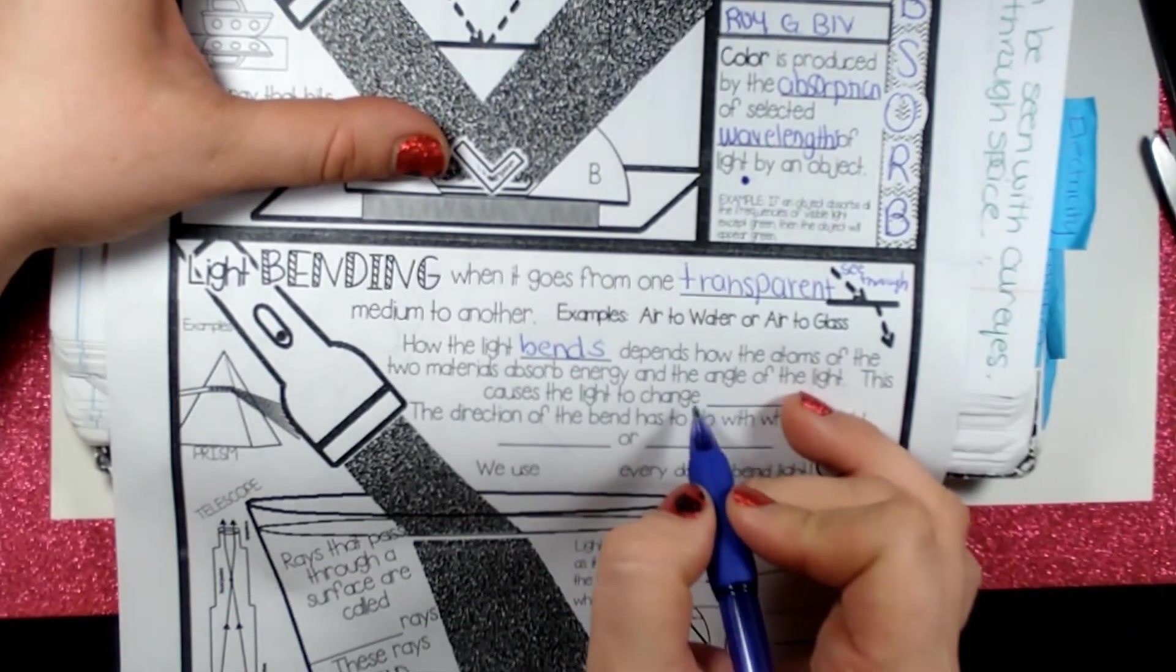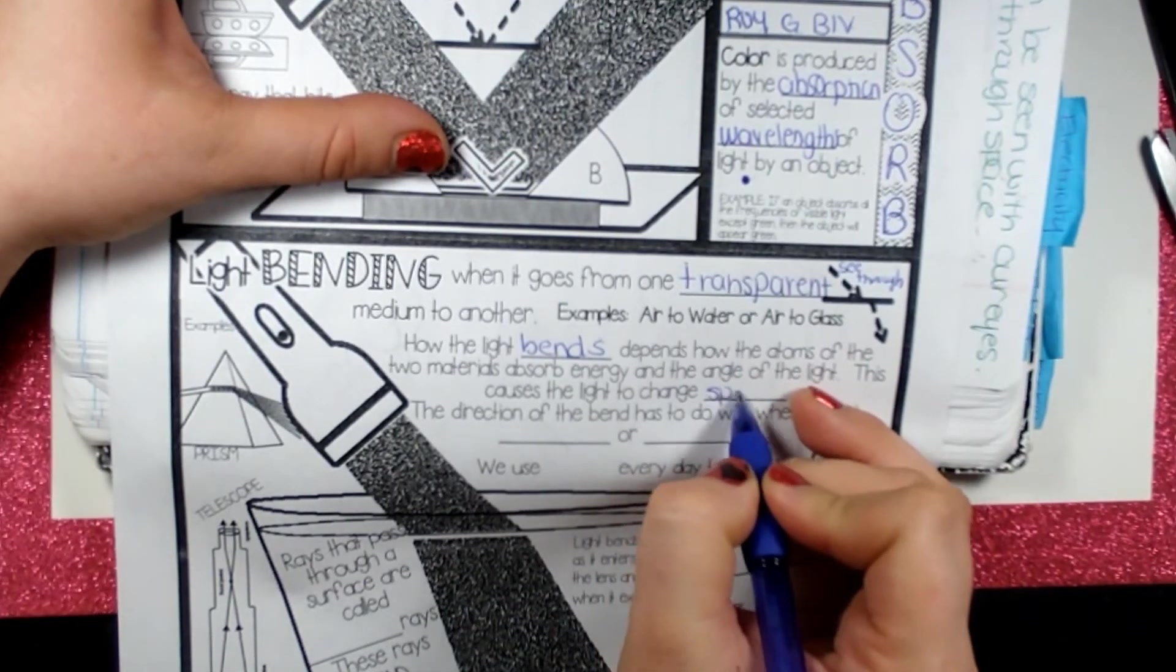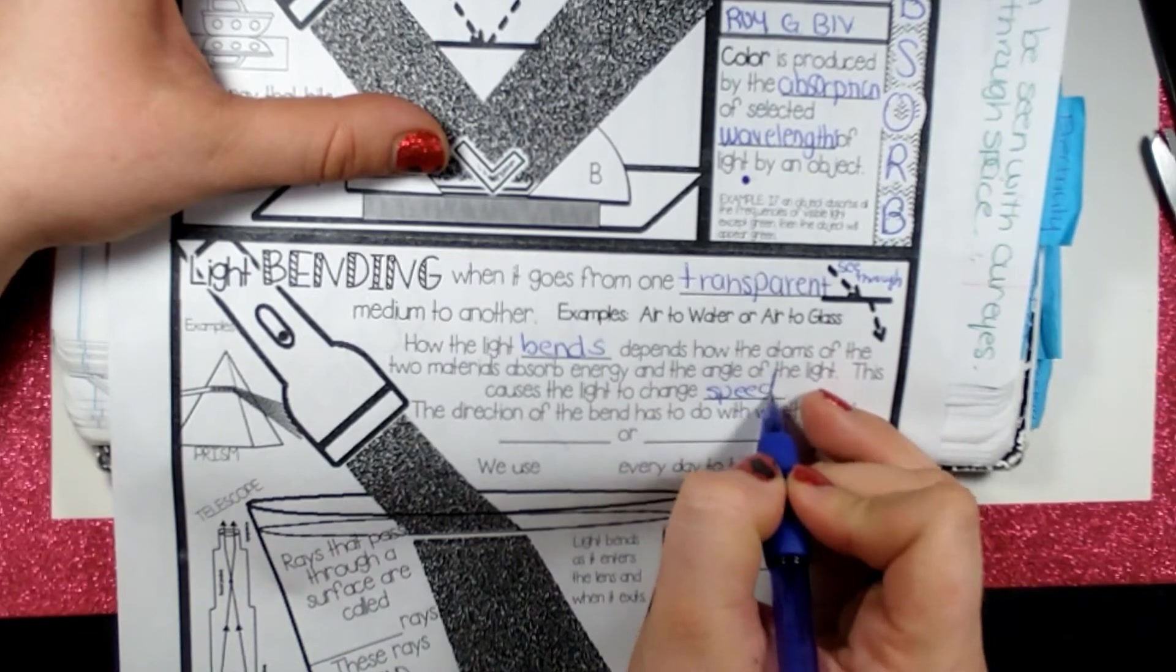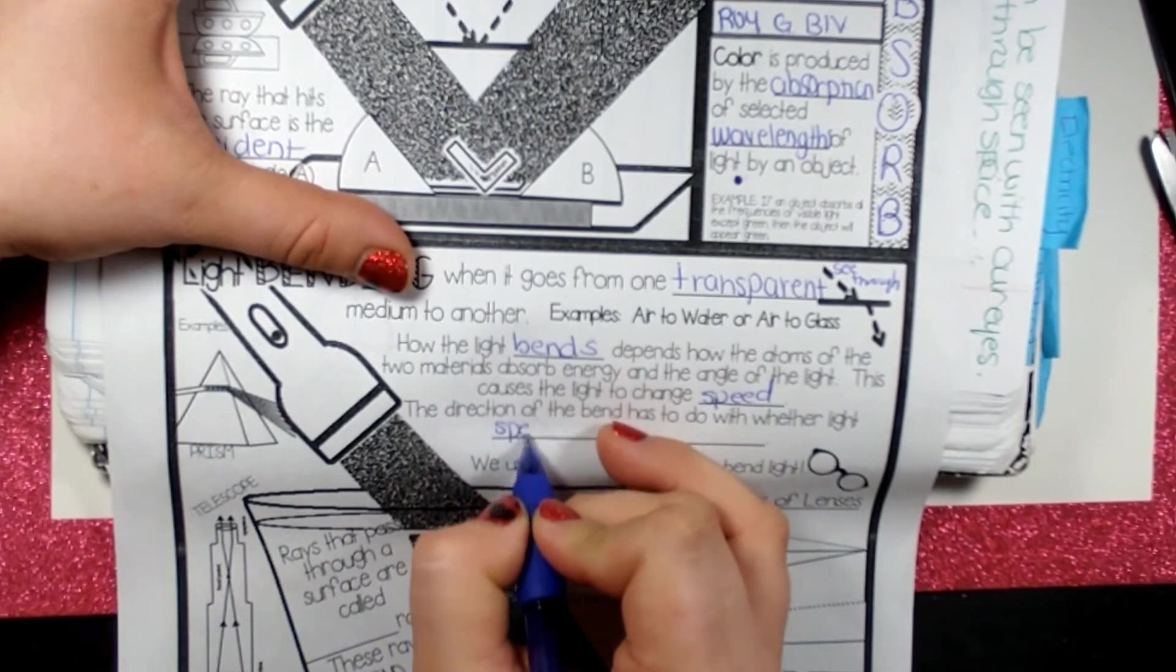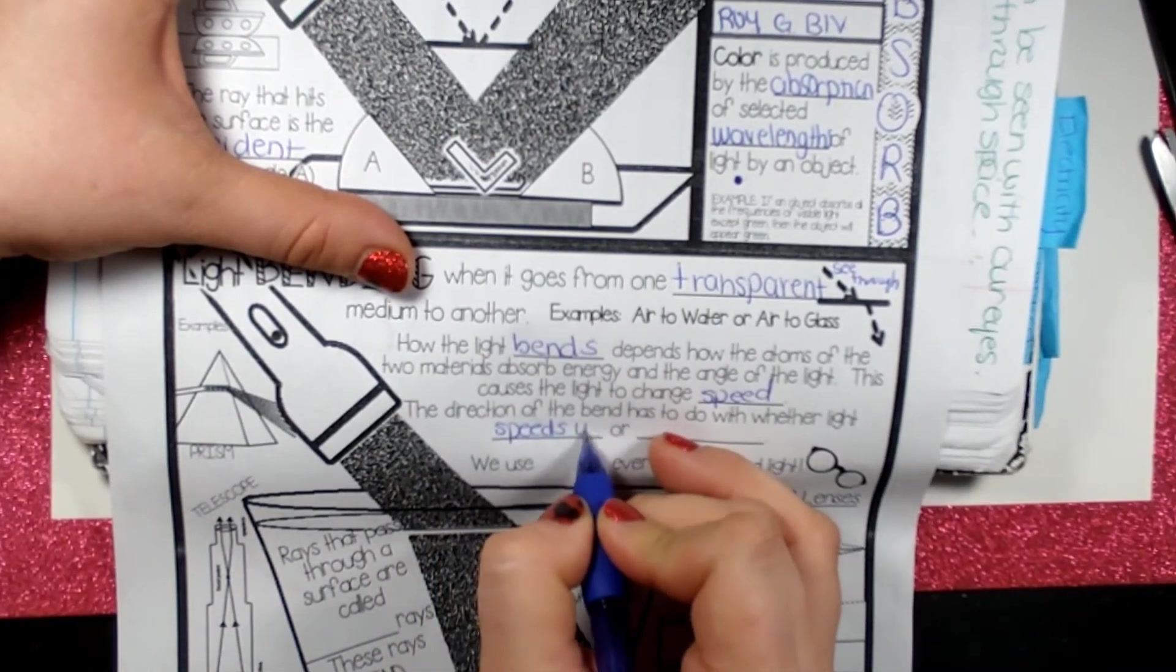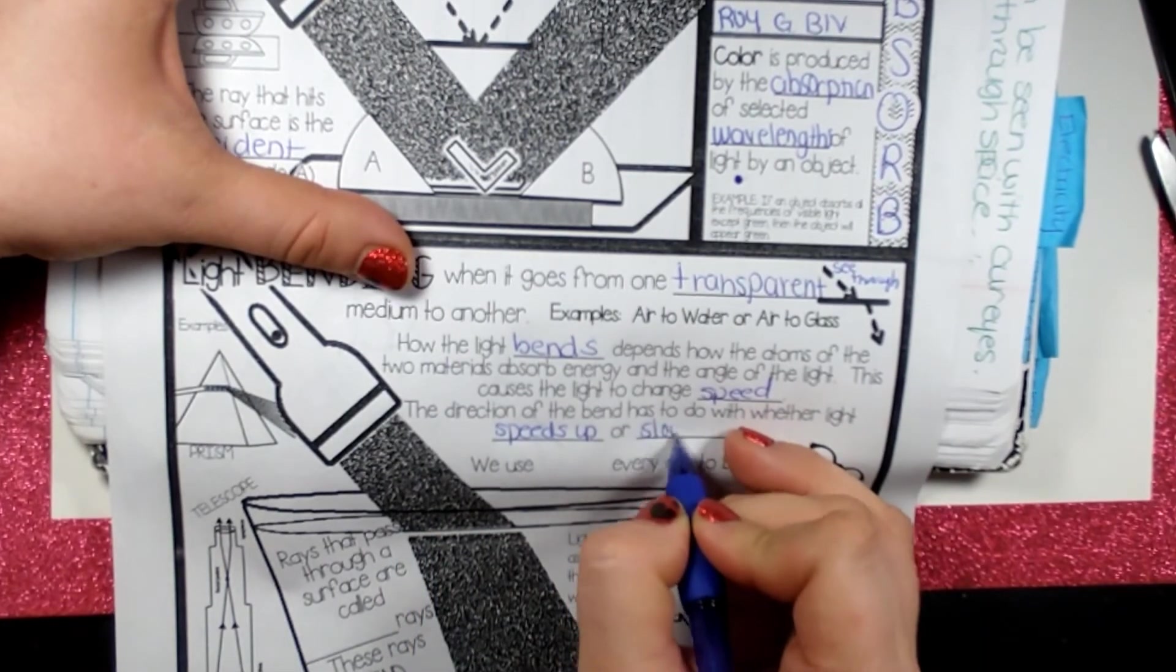Okay, this causes the light to change speed. The direction of the bend has to do with whether the light speeds up or slows down. So what does that mean?